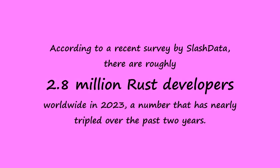Rust is particularly well suited for projects where performance, reliability, and safety are critical — such as operating systems, embedded systems, web servers, and, of course, blockchain applications. Its growing community and adoption by major tech companies highlight its status as a language built for the future.